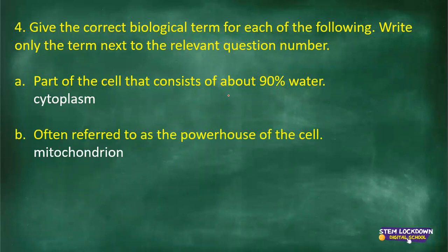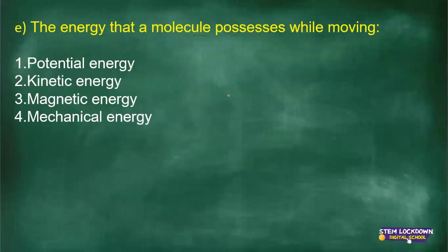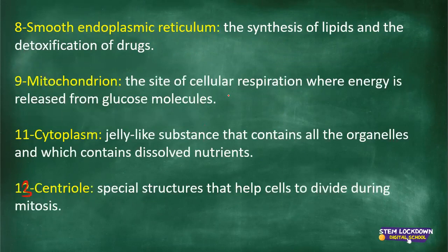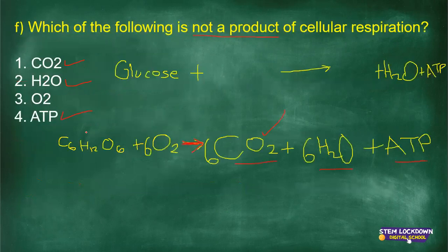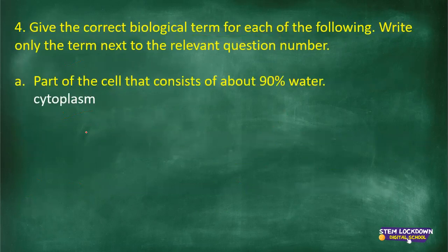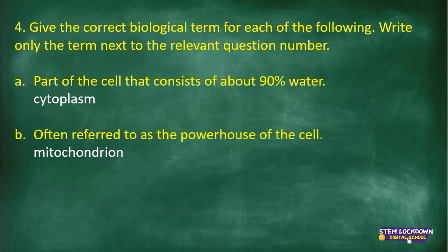This is often referred to as the powerhouse of the cell — it is the mitochondrion. The mitochondrion is the site of cellular respiration, where energy is released from glucose molecules. The glucose and oxygen are used to produce water, carbon dioxide, and energy. That's why the mitochondrion is called the powerhouse — whenever you speak of energy, the organelle involved is the mitochondrion.